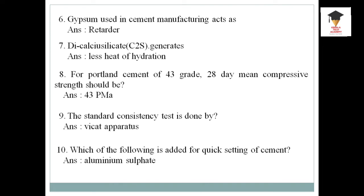Now let us see the compressive strength of 43 grade Portland cement. The answer is 43 megapascal. Next, the standard consistency test — it can be done by using the Vicat apparatus.